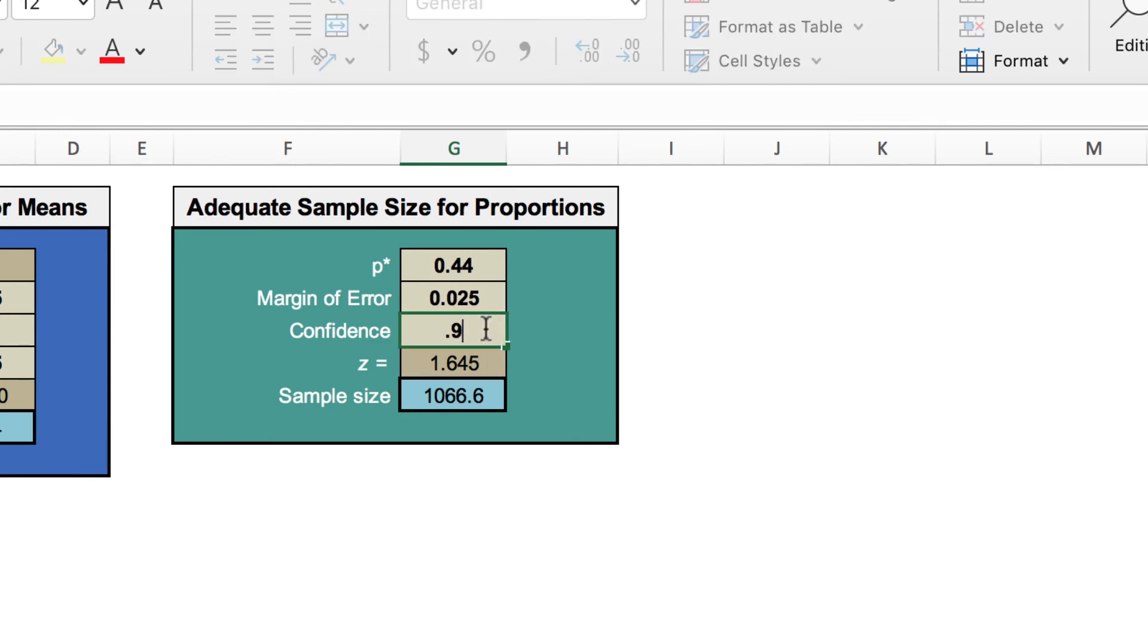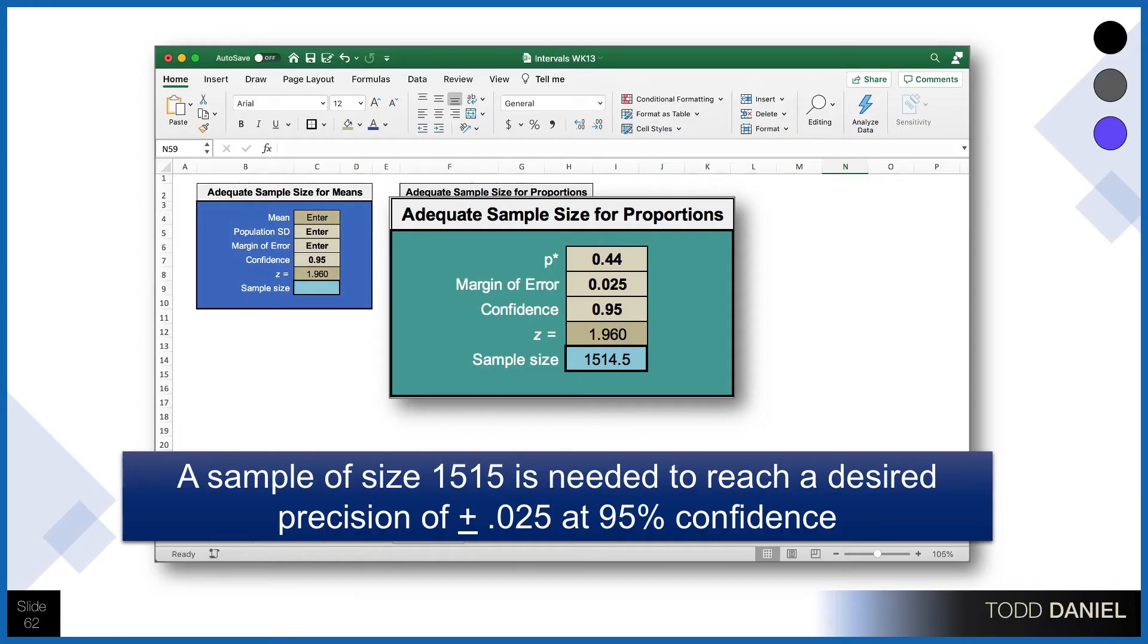And this will give us a sample size of 1,514.5, which again we're going to need to round up. A sample size of 1,515 is needed to reach a desired precision of positive or negative .025 at 95% confidence.